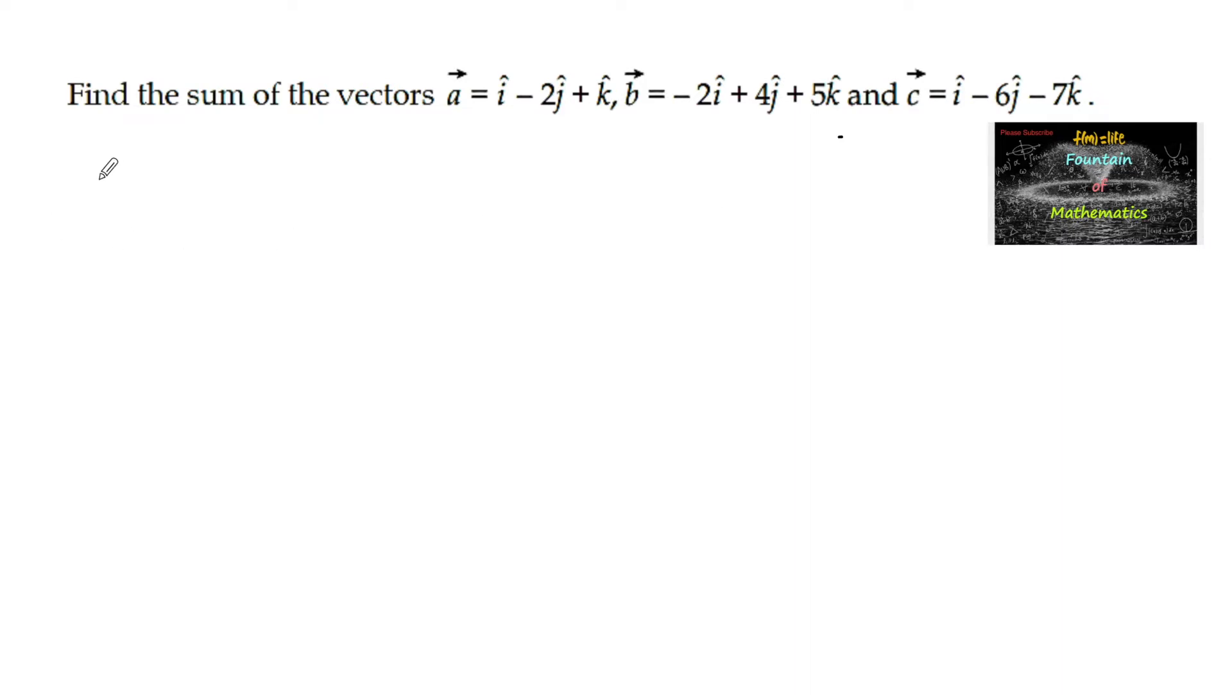So the sum of the given vectors is equal to vector a plus vector b plus vector c.